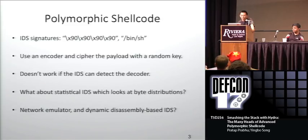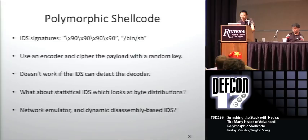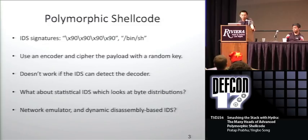There are also new IDS systems being introduced now based on dynamic emulation. There's an actual sensor on the network inline with your traffic trying to execute all the bytes that come across the network. People have actually gotten this to work on 100 megabit line rates, which is very impressive. There's also dynamic disassembly based IDS, which dynamically disassembles all network traffic and tries to look for large basic blocks. Normal data should not have large basic blocks when you disassemble them, and if you find large chunks of executable code it could be an indication of an exploit coming through.